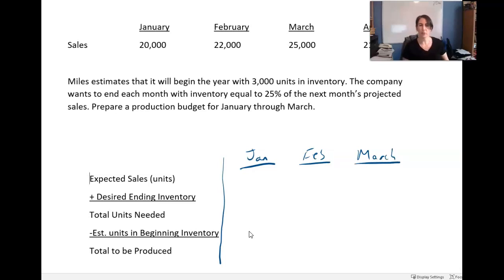So their expected sales in January were 20,000 units, right? That's how many we plan on selling per the above. But I don't want to just make what I'm selling. I want to make a little bit more. I want to end each month with inventory equal to 25% of the next month's sales. So basically I want to work a little ahead. Let me just go through and put the sales into January, February, March, because it looks like we're going to need those numbers. 22,000 and March is 25,000. I think we're going to need those April numbers as well.